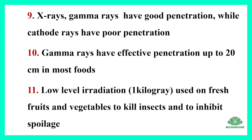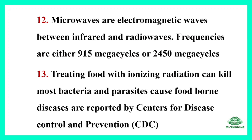Low-level irradiation is used on fresh fruits and vegetables to kill insects and to inhibit spoilage. Microwaves are electromagnetic waves between infrared and radio waves, with frequencies of either 915 megacycles or 2450 megacycles.